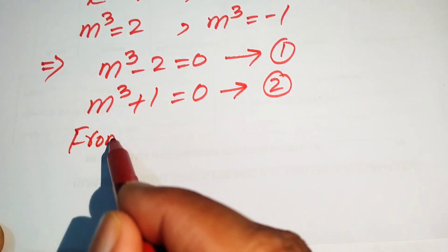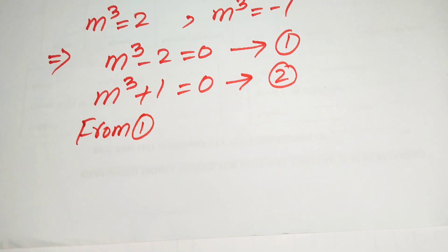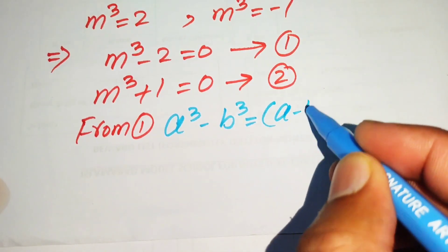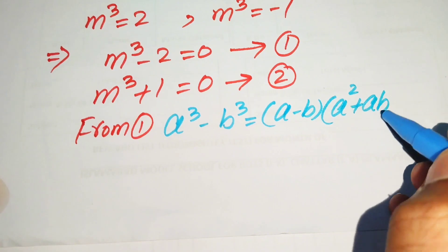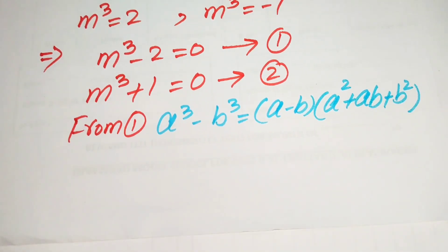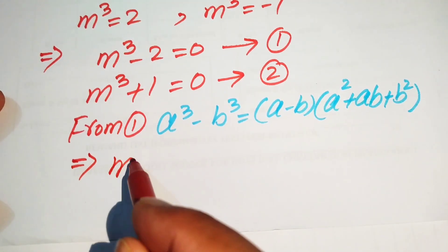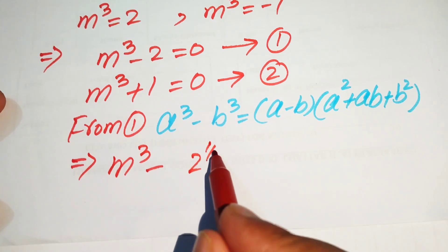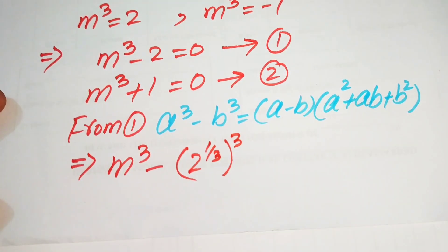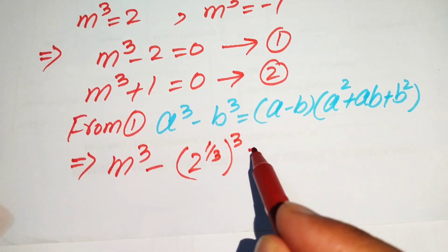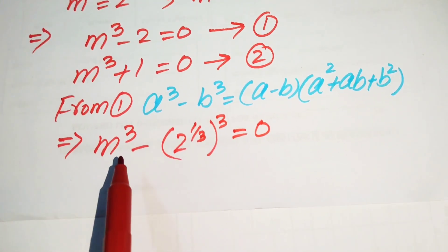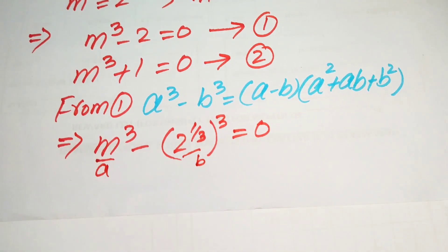For equation 1, we use the cubic factoring formula: a cubed minus b cubed equals (a minus b)(a squared plus ab plus b squared). We rewrite 2 as (2 to the power of 1 over 3) cubed, so equation 1 becomes m cubed minus (2^(1/3)) cubed equals to 0. Here a equals m and b equals 2 to the power of 1 over 3.